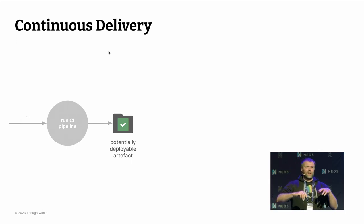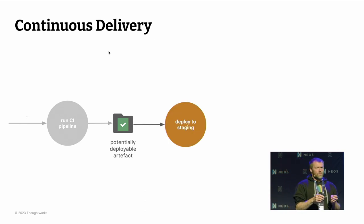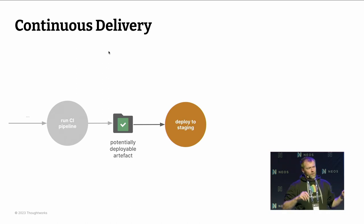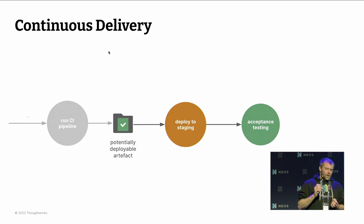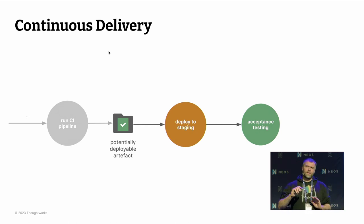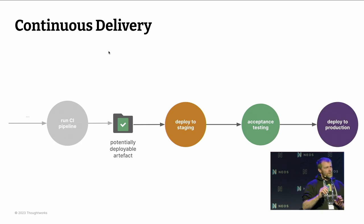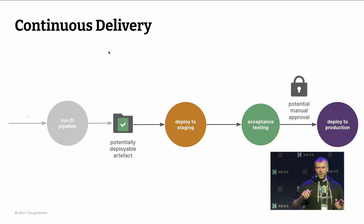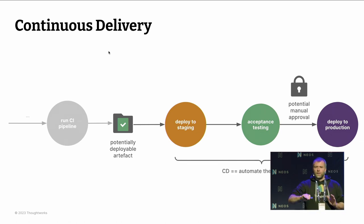Then let's look into continuous delivery, which is kind of the follow-up process. You take this potentially deployable artifact and have an automated deployment, usually first to some staging environment. You don't want to go directly into production. Usually you have some non-production staging environment in which you deploy and run in a production-like environment. You can have acceptance testing — automated testing on top — but also user acceptance testing or exploratory testing. Last but not least, you have the final step of deploying to production. What's very important is that this whole thing is automated — painless, easy to repeat, and easily reproducible.